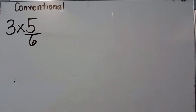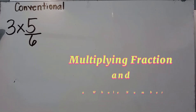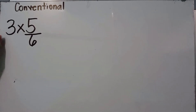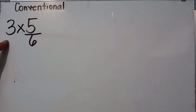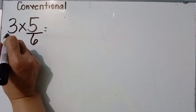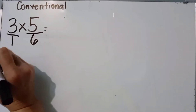Let's have some examples. Three times five over six. We are multiplying a whole number and a fraction. When multiplying a whole number by a fraction, there is an invisible one as its denominator — meaning three is actually three over one.